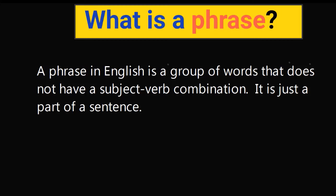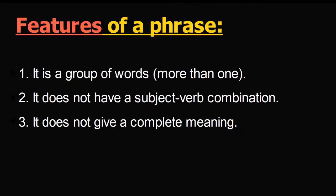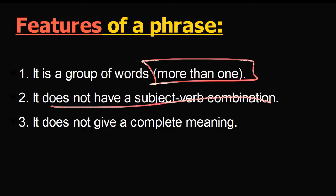A phrase in English is a group of words — more than one word — which does not have a subject-verb combination. It cannot have both the subject and the verb. The main features of a phrase: number one, it's a group of words; number two, it does not have a subject-verb combination — the moment it has both it becomes a clause; number three, it does not give a complete meaning.